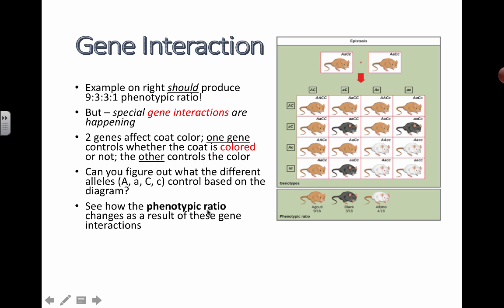So see how the phenotypic ratio changes as a result of these gene interactions. So although we are supposed to be predicting a 9 to 3 to 3 to 1, that's not what we're getting with the phenotypic ratio.